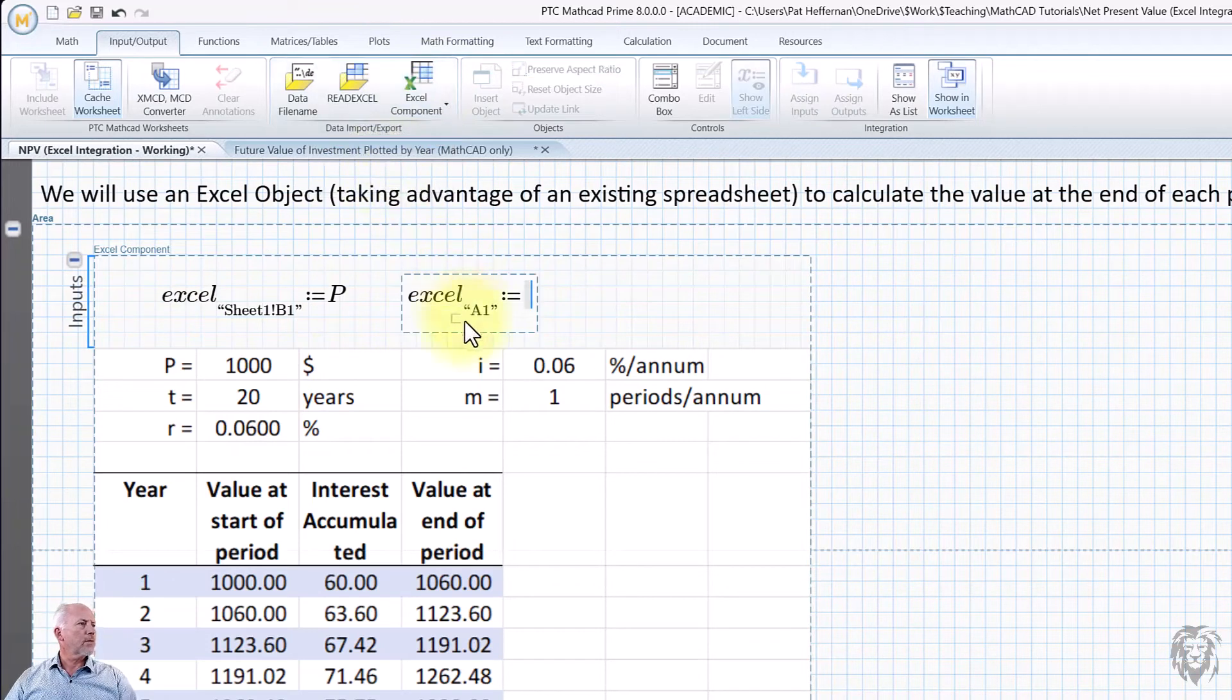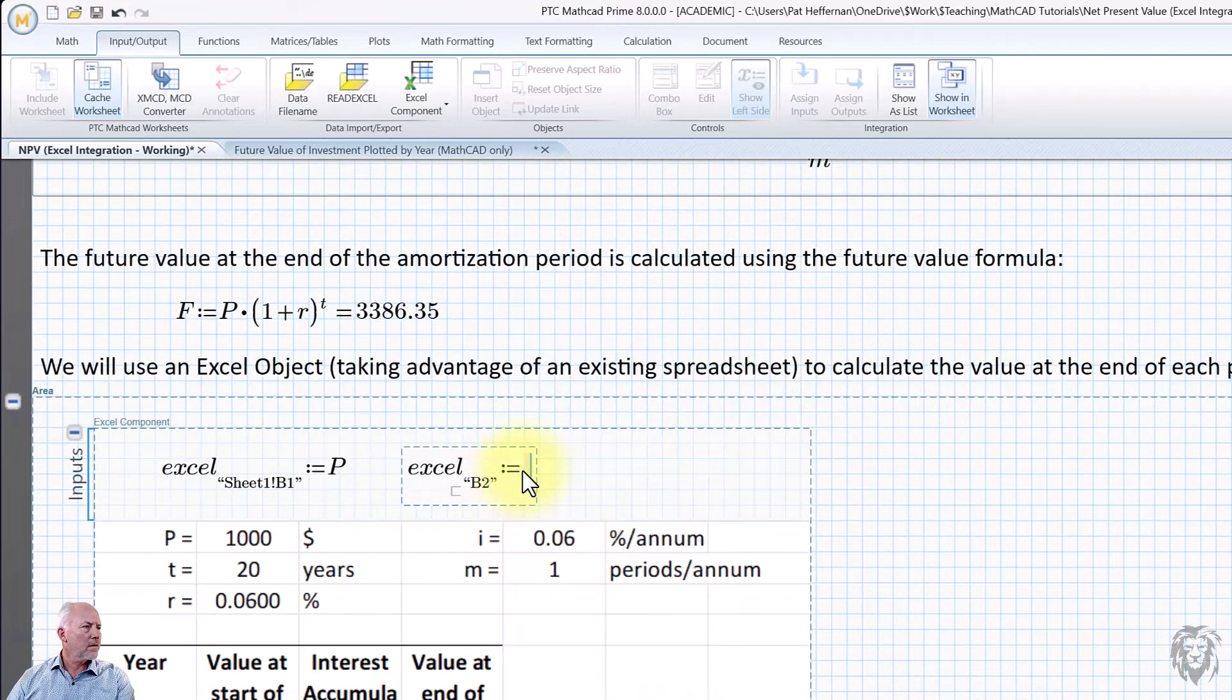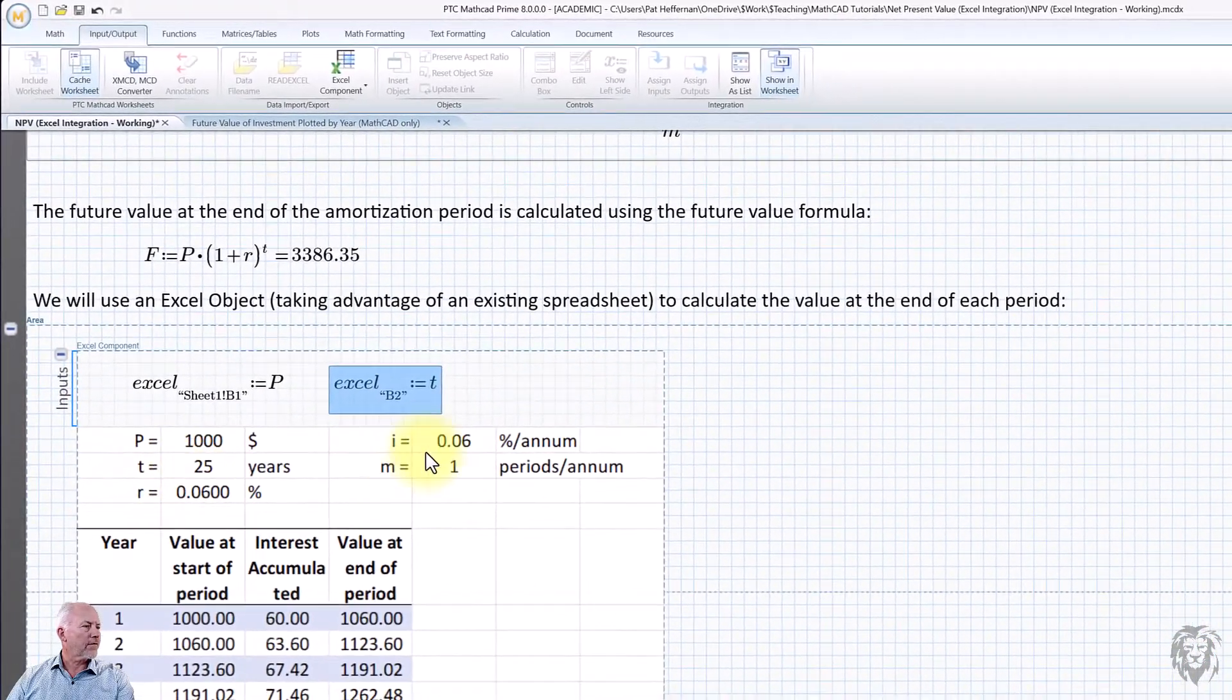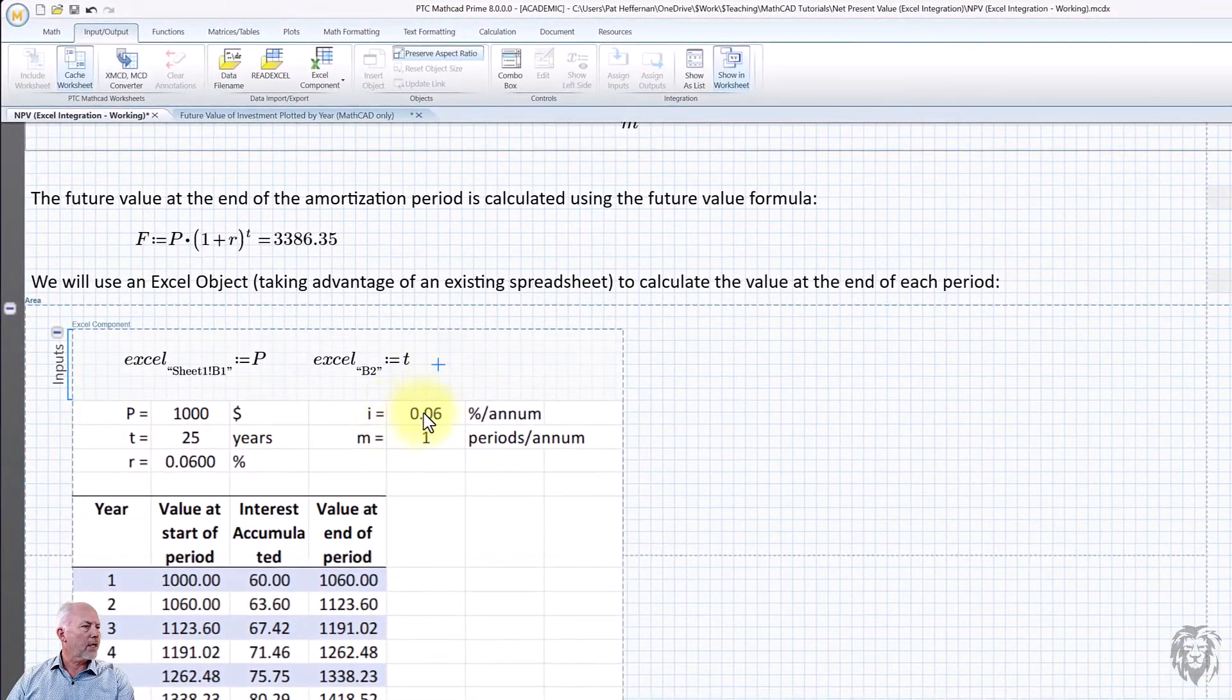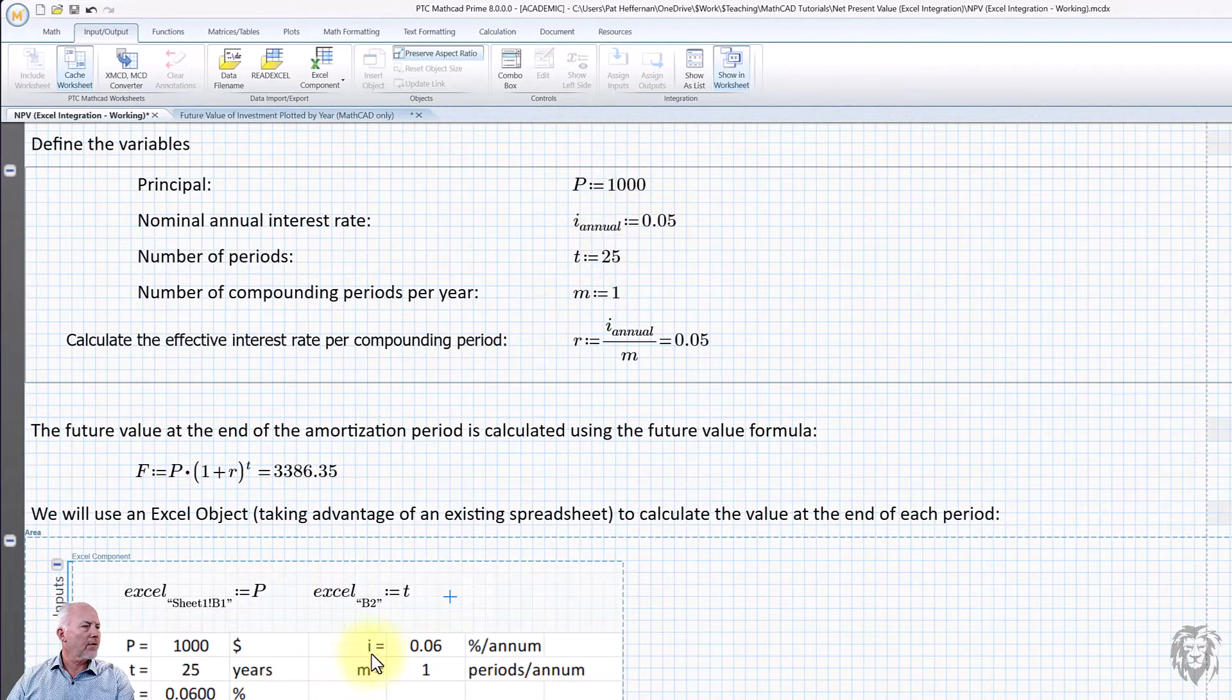So again, input expression. So what do we want in this case, we want B two to be their period. So B two and what's our period called is T. And that now takes on the value of 25. And we want I to take on our interest rate or I annual. So let's do that here.